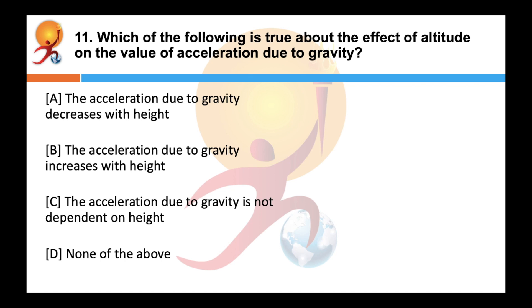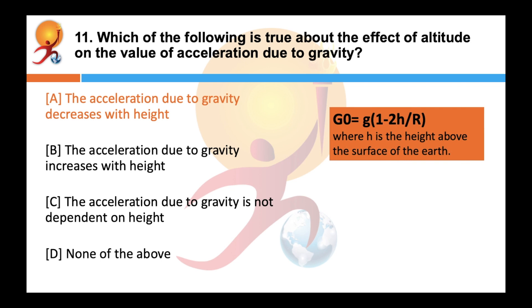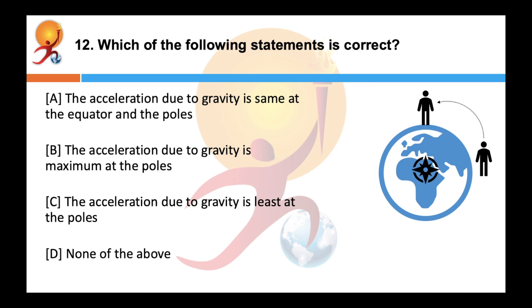Which of the following is true about the effect of altitude on the value of acceleration due to gravity? The answer is A. Acceleration due to gravity decreases with height, given by g' = g(1 − 2h/R), where h is the height above the surface of the earth. Acceleration due to gravity is maximum at the poles and least at the equator, and increases as we go from equator towards the poles.